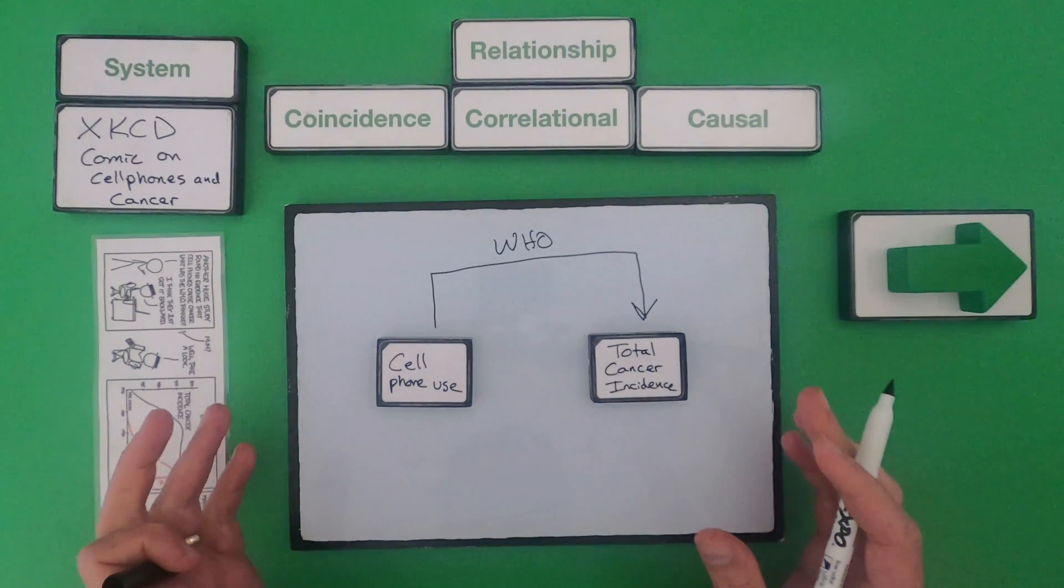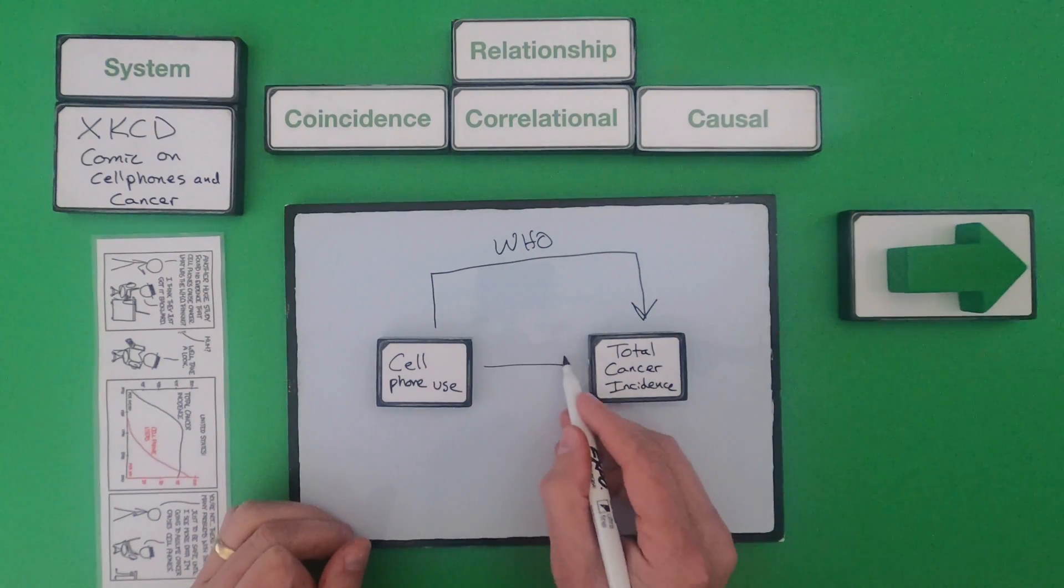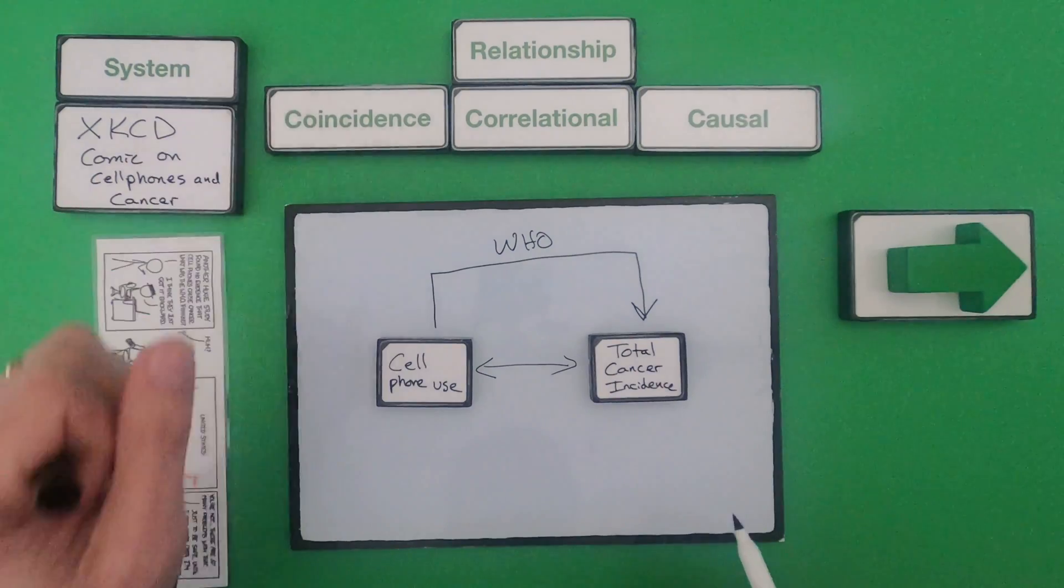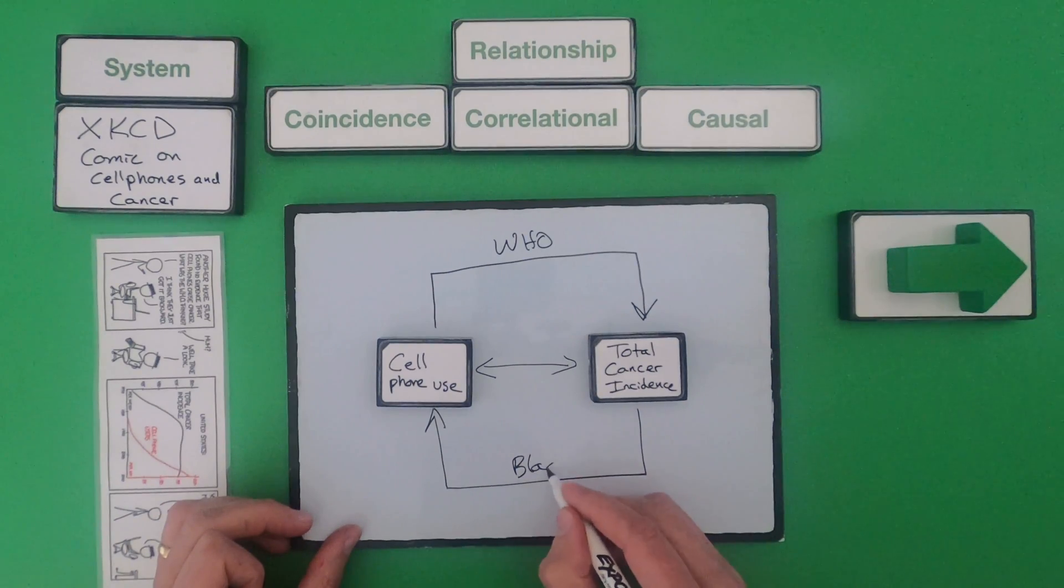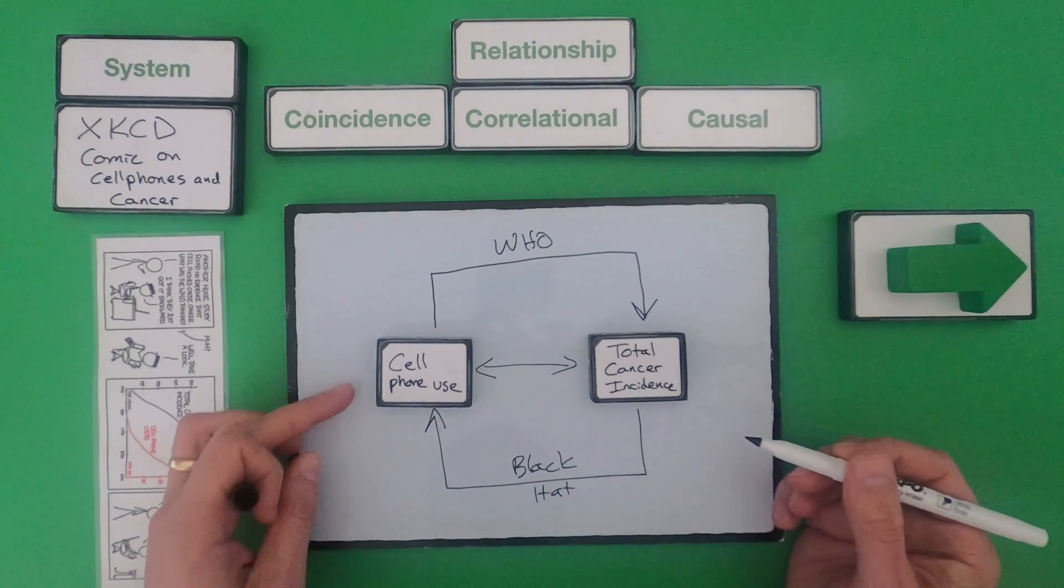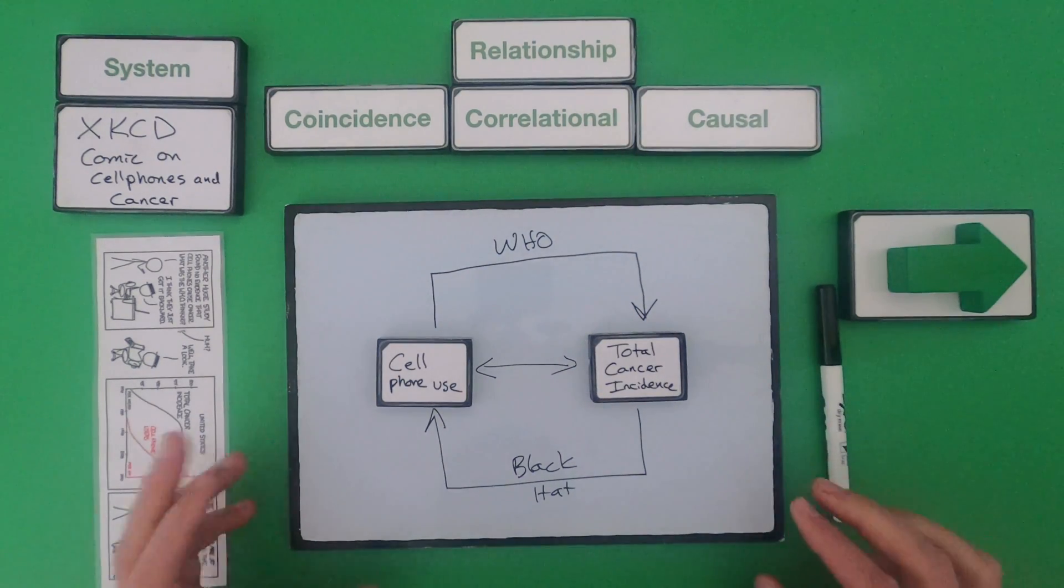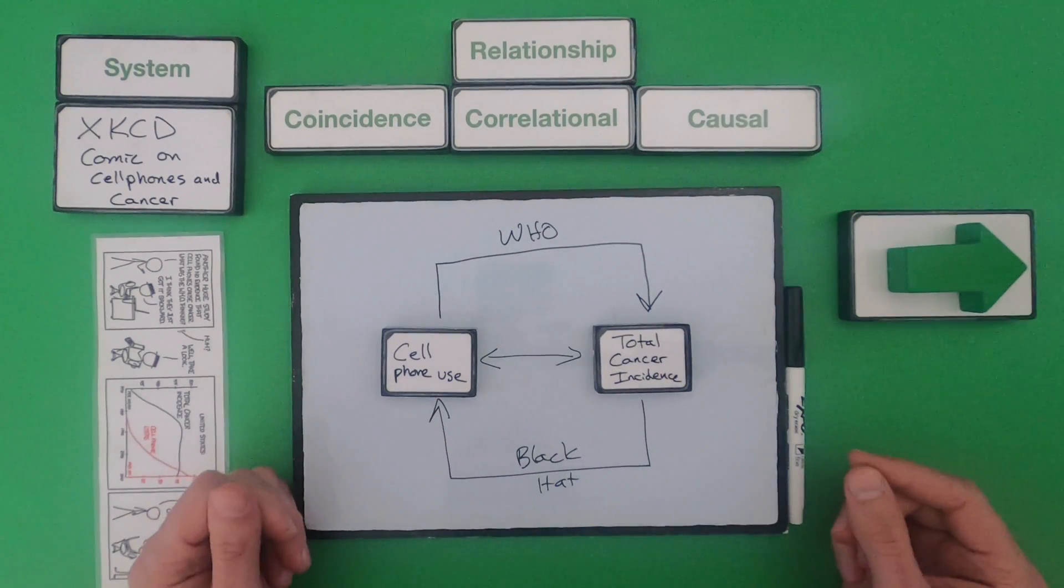We could say that the person without a hat is just saying that there's either a correlation between the two or there is just a coincidence going on. And then the person in the black hat is saying that this is where it's a joke. So black hat is saying that the total cancer incidence is causing cell phone use.